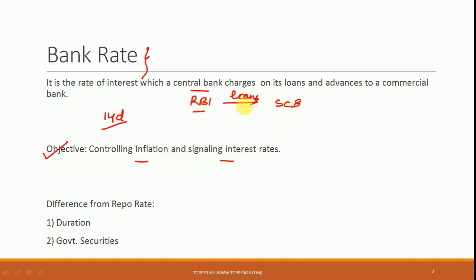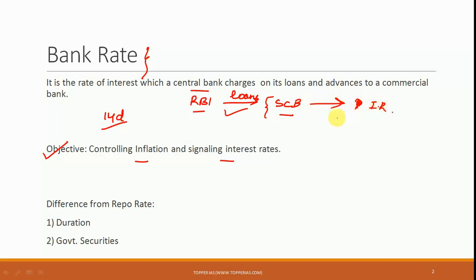If it is the loan which the scheduled commercial banks are seeking from RBI, then based on this interest rate, the scheduled commercial banks will further give out their own loans. And this is how it is going to impact the interest rate of these particular banks. So this is one objective of bank rate.